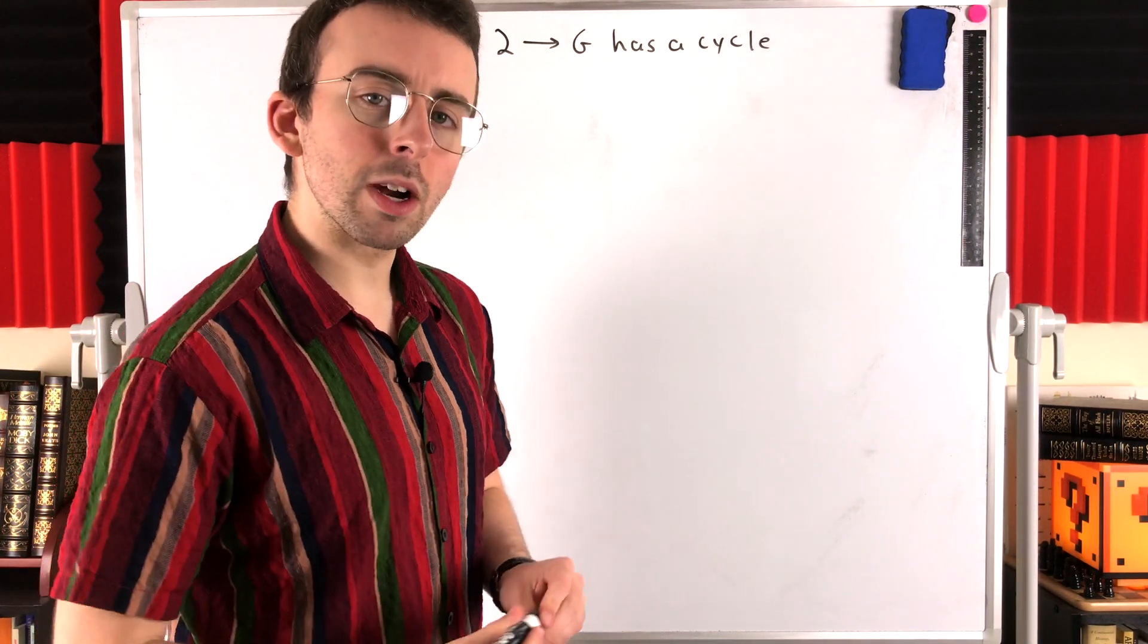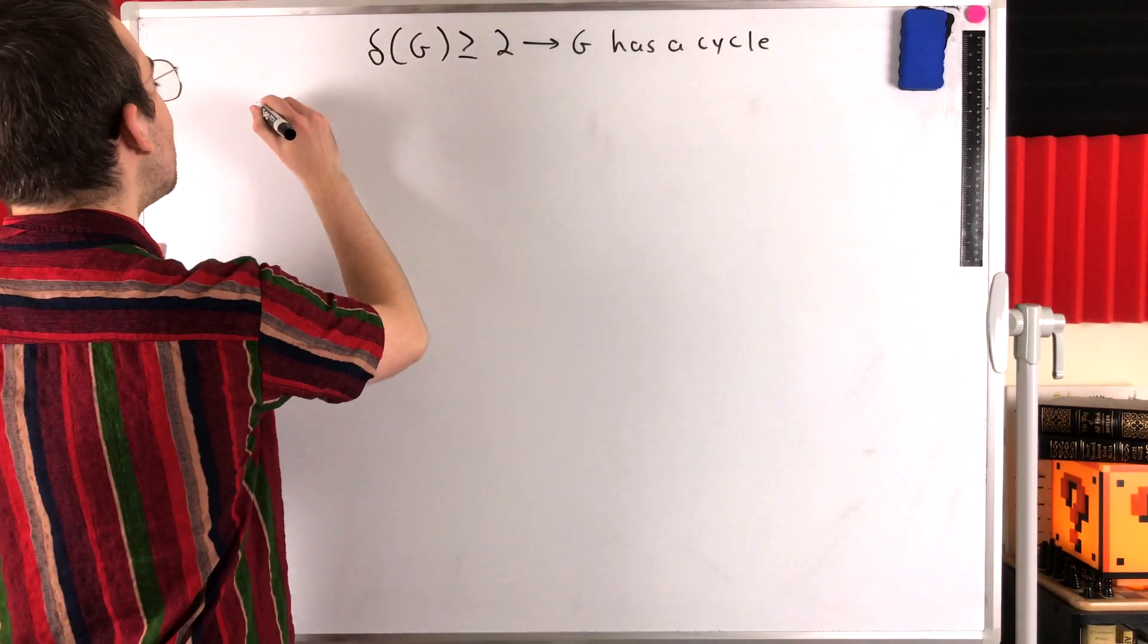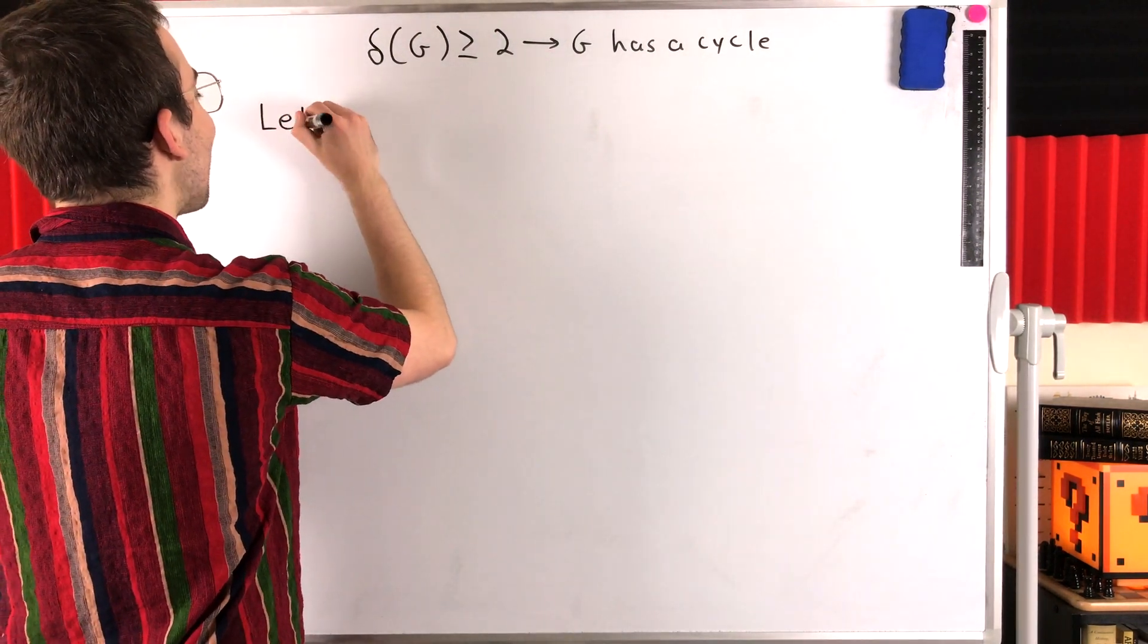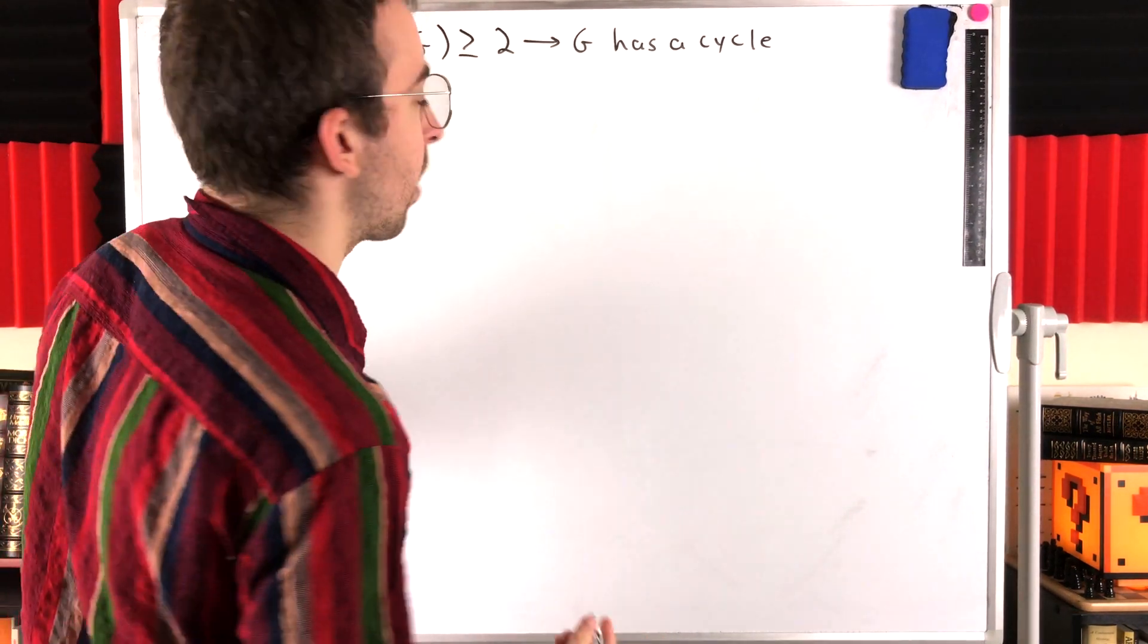The proof is pretty straightforward, and it begins with an object that we use in a lot of graph theory proofs, which is a longest path in the graph. Let P be a longest path in our graph G.